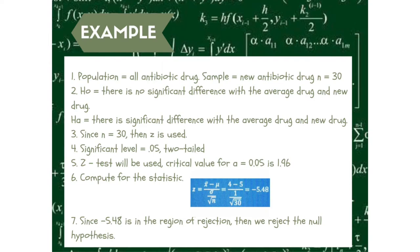Here is an example on how to use the steps in hypothesis testing. First, population equals all antibiotic drugs; sample equals new antibiotic drug; N equals 30. Second, H0: there is no significant difference with the average drug and new drug. HA: there is a significant difference with the average drug and new drug. Third, since N equals 30, Z-score is used. Fourth, significance level equals 0.05, which is two-tailed. Fifth, Z-test will be used; critical value for alpha equals 0.05 is 1.96. Sixth, compute for the test statistic. Seventh, since negative 5.48 is in the region of rejection, then we reject the null hypothesis.